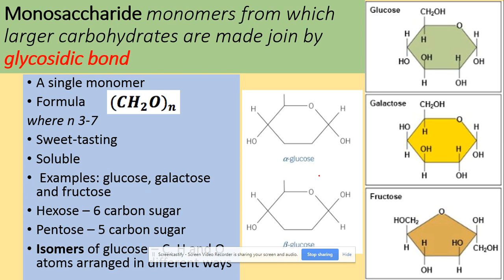So it's a single monomer. The formula for the monosaccharides is C for carbon, H₂ for hydrogen, O for oxygen, where N is a number between 3 to 7. For instance, if N is 6, your formula will be C₆H₁₂O₆, which stands for glucose. The characteristics of monosaccharides are that they are sweet-tasting and soluble.